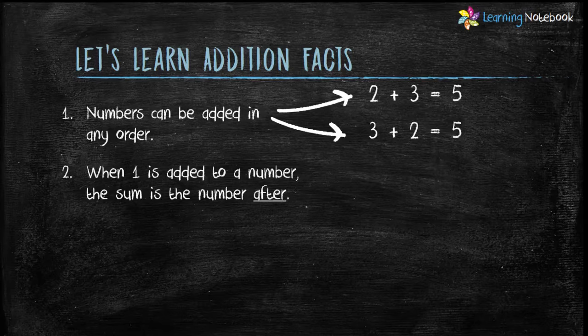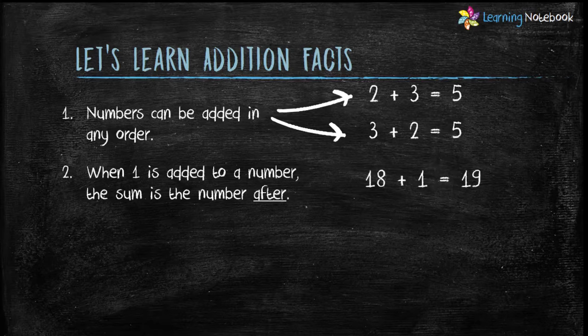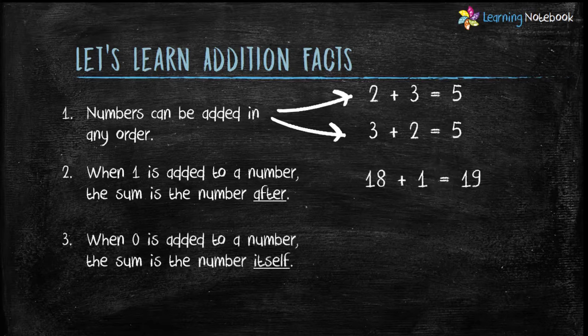The second fact is: when 1 is added to a number, the sum is the number after. For example, when 1 is added to 18, the answer is 19, which is the number after 18.